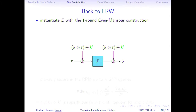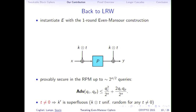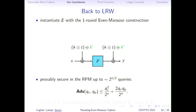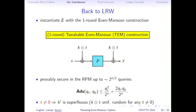It is simple to prove that this construction is secure in the random permutation model up to the birthday bound. The bound depends on the number of construction and permutation queries. If you forbid the zero tweak, then key K' is not needed because K·T is already uniformly random for non-zero tweak. What we get is the simplest tweakable block cipher construction from one public permutation. We call this the tweakable Even-Mansour construction with one round, or TEM-1.